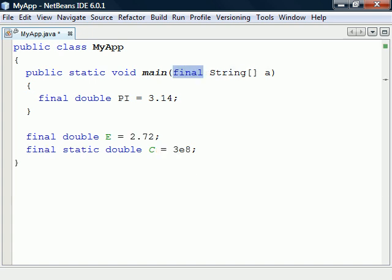Another place where we may apply the final modifier is to method parameters to make them unchangeable.